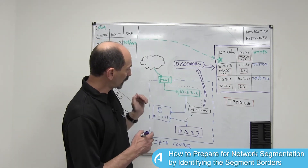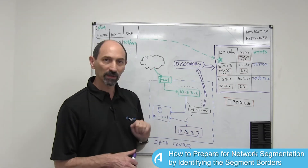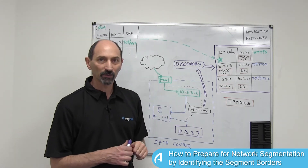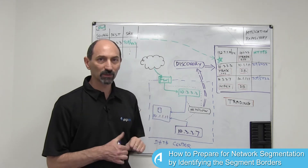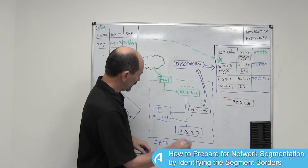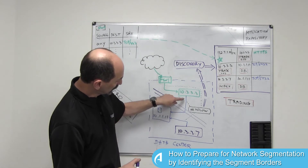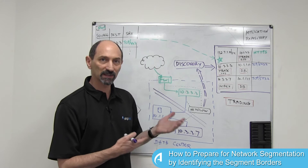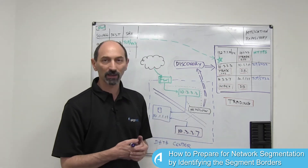Now you want to decide how to micro-segment. You want to put another filter here so that some of these components are separated from the others, and you need to find out what that is going to do in terms of filtering. If you introduce a new filter along this line, then all of a sudden some of the flows that cross this boundary need to have explicit rules inside the new network filter to allow the traffic, otherwise the trading application will fail.